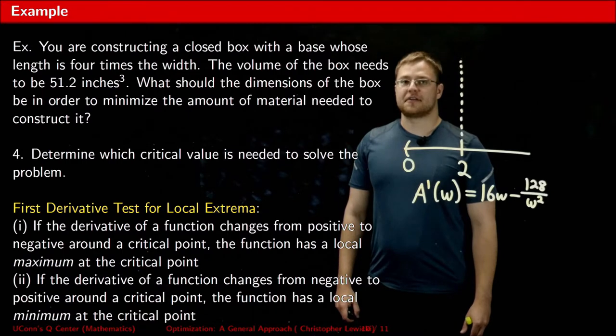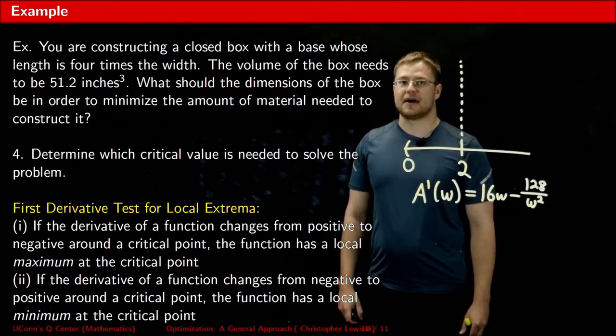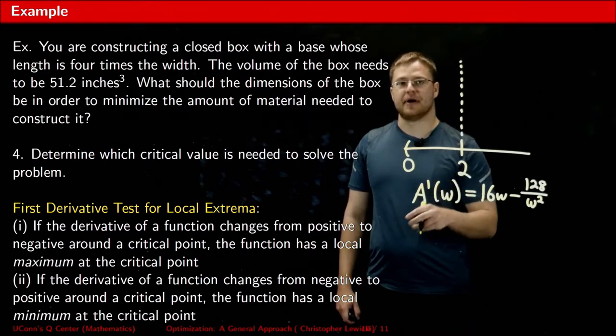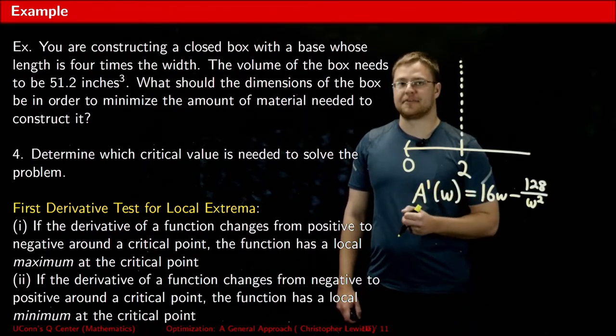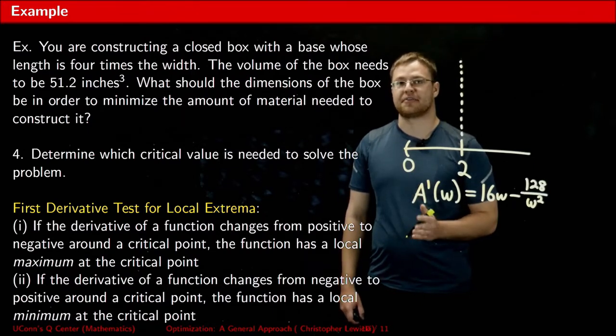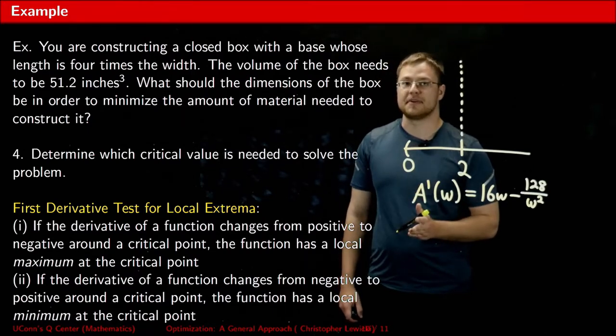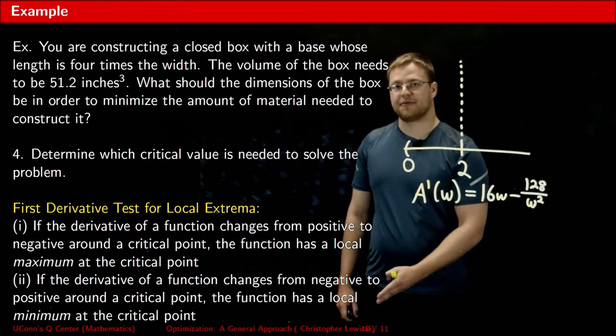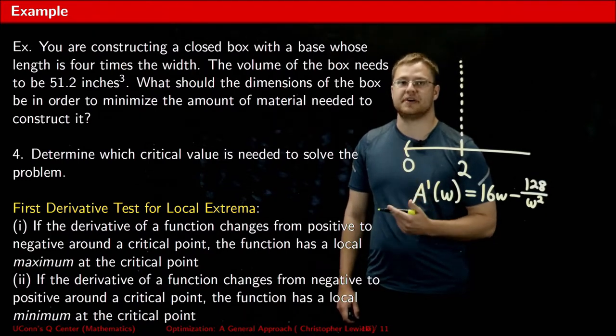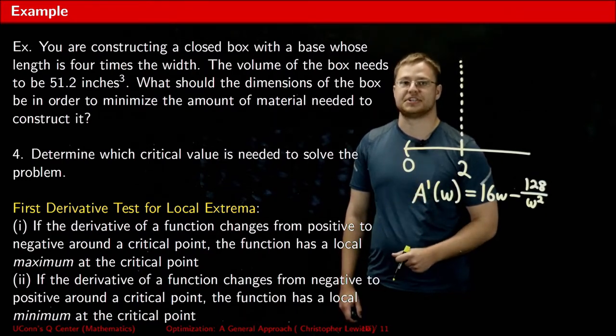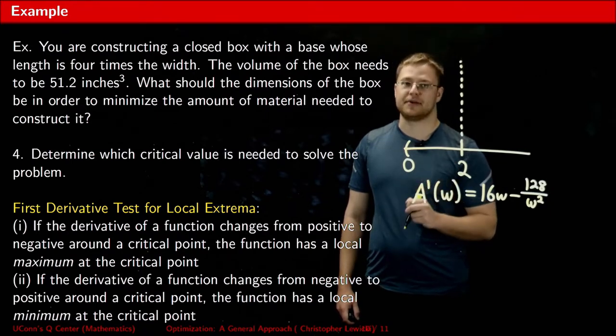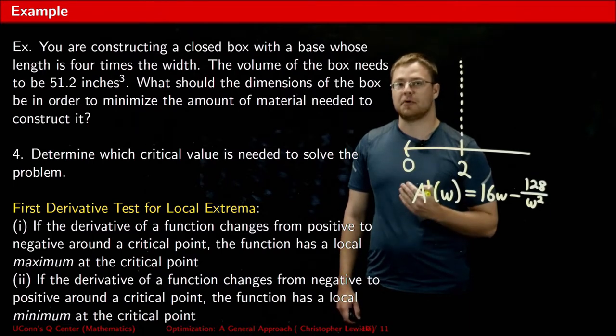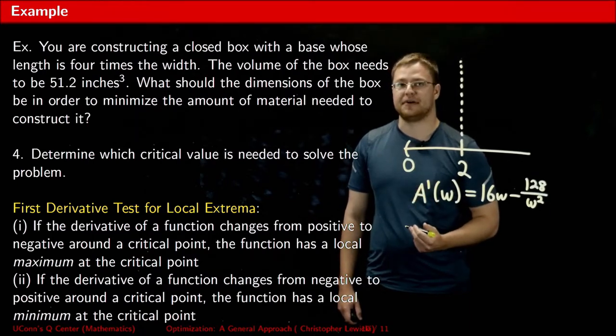The next step is to determine which critical value out of the values you found are going to help you solve the problem. In this case, we have only one critical value, two. However, in a lot of other optimization problems, you might have two or more critical values, some of them being maximums, some of them being minimums. However many you end up having, what you need to do is use the first derivative test to help you figure out which critical value is going to help you answer the question.